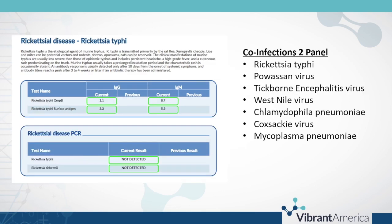The co-infections two panel has co-infections that are less common, however still are tick-borne, but can also have differing vectors — for example, West Nile virus is more mosquito-driven, but can be a co-infection as part of somebody struggling with a Lyme diagnosis. On our co-infections two panel, we have Rickettsia, Powassan virus, tick-borne encephalitis virus, West Nile virus, C. pneumoniae, Coxsackie virus, and Mycoplasma pneumoniae. Just like on the previous Lyme and co-infections one panel, we are testing for the IgG, the IgM, and the PCR for all of these organisms.